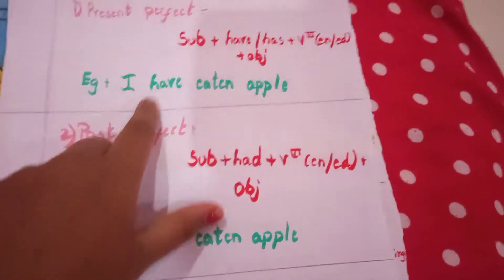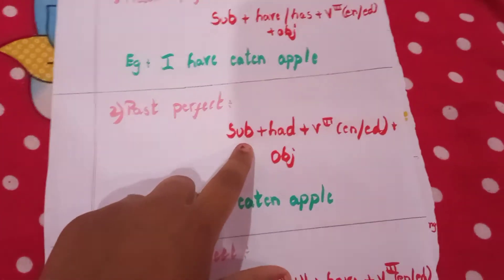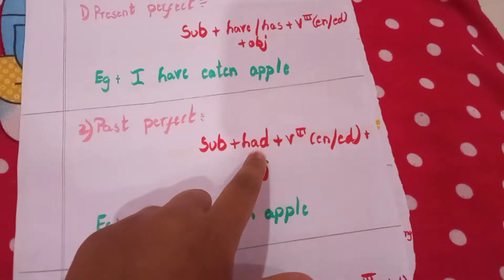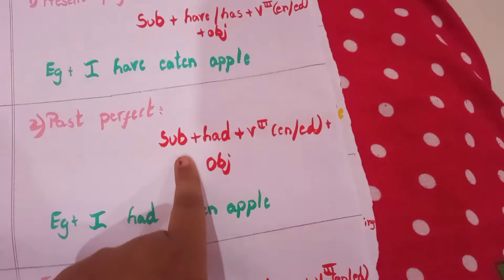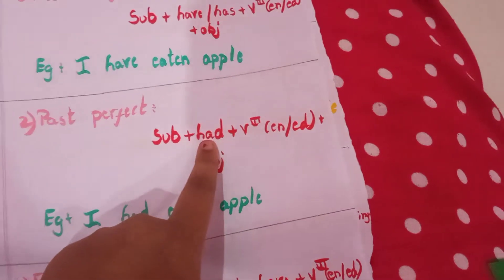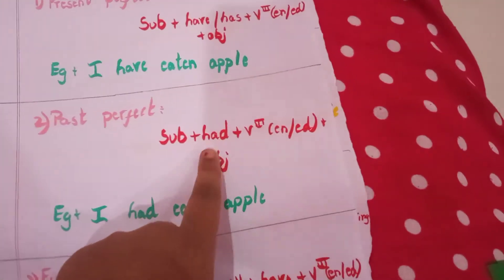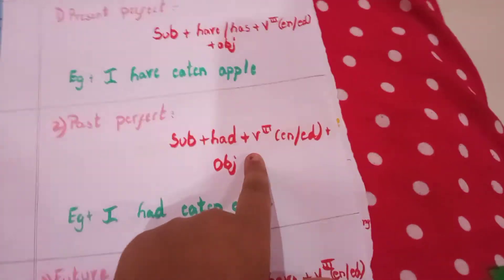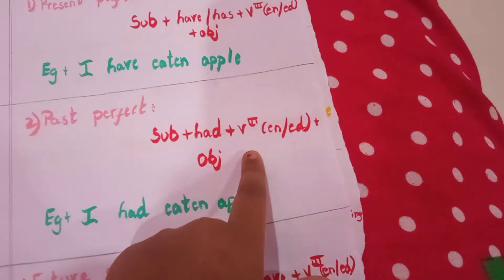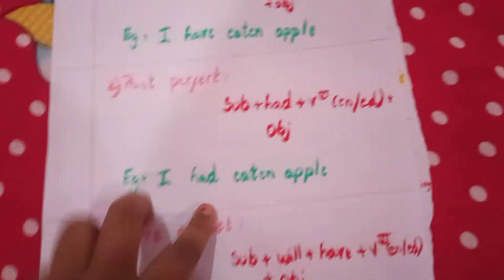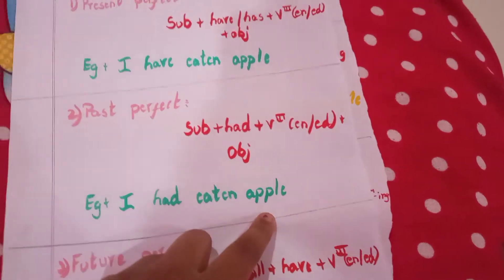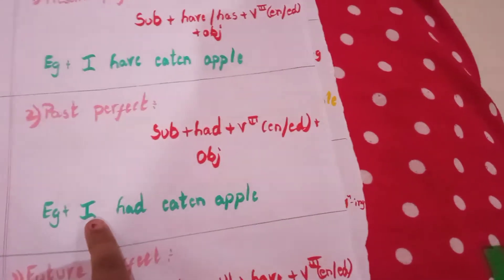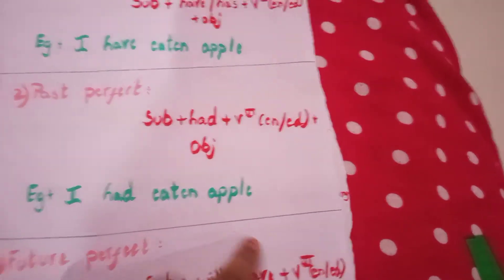Let's convert into past perfect. The formula is subject plus had plus V3 plus object. Example: 'I had eaten apple.'